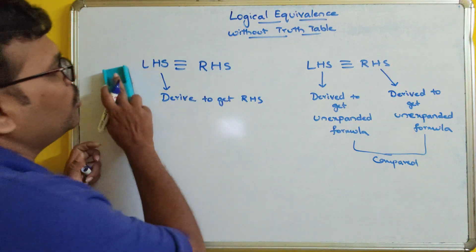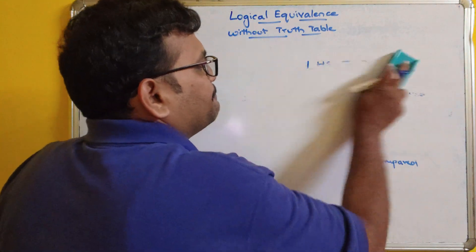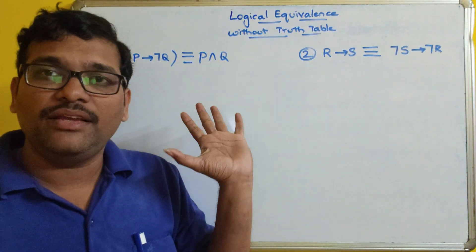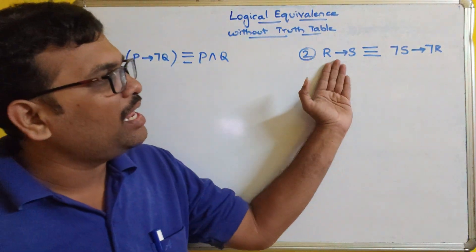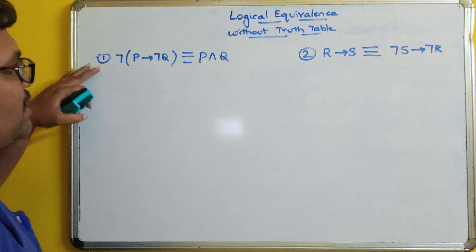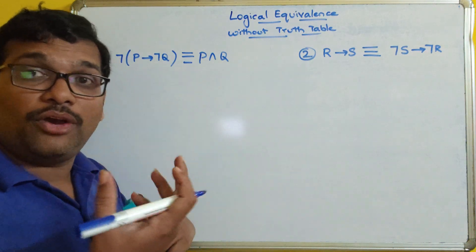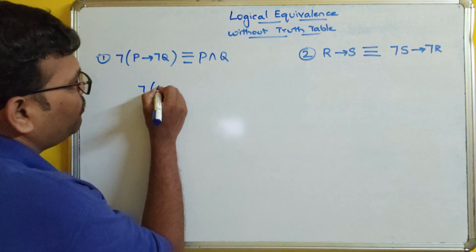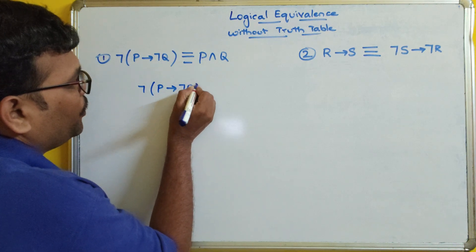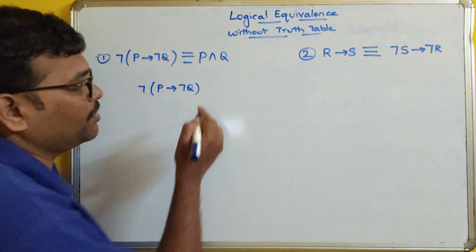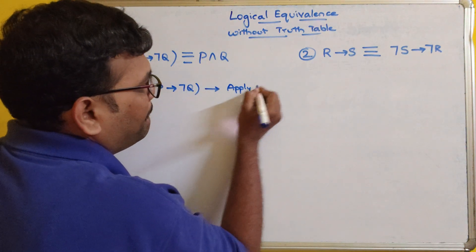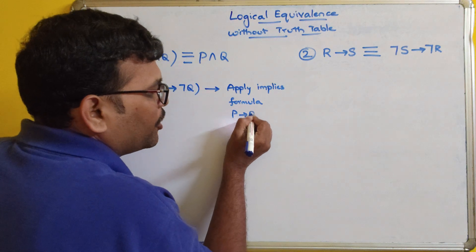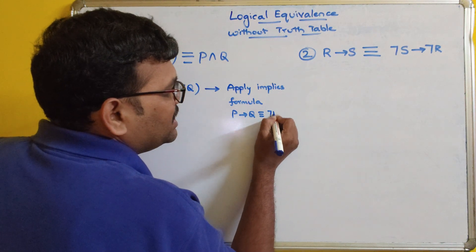Let us start with the first example: LHS is logically equivalent to RHS. I am considering this LHS — negation of P implies negation Q. We know the implies formula: P implies Q is equivalent to negation P or Q. So we apply the implies formula here.